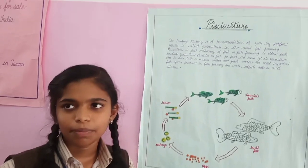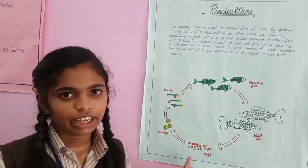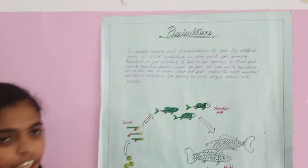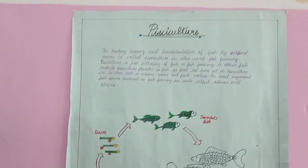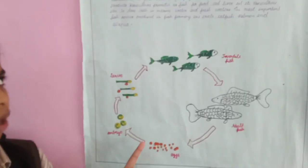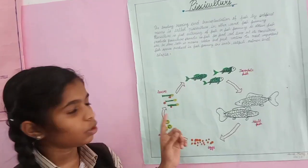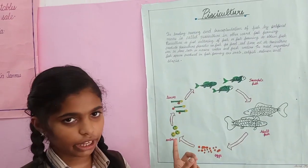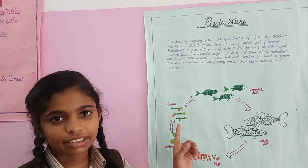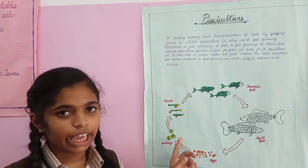Hi everyone. I am Sarah and I am here to explain pisciculture. The rearing, caring, and transplantation of fish by artificial means is called pisciculture — in other words, fish farming. Pisciculture is the culturing of fish or fish farming to obtain fish products. Pisciculture provides us fish, fish oil, cod liver oil, etc.